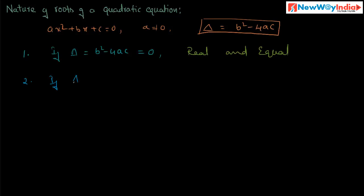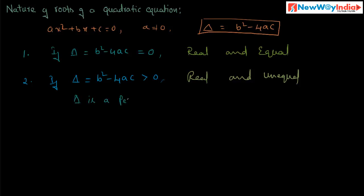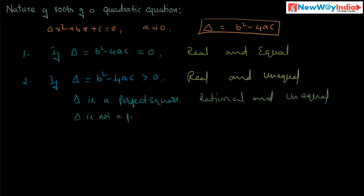Case 2: if delta, that is b squared minus 4ac, is greater than 0, then the roots are real and unequal. Within this case, if delta is a perfect square, then the roots are rational and unequal. If delta is not a perfect square, then the roots are irrational and unequal.